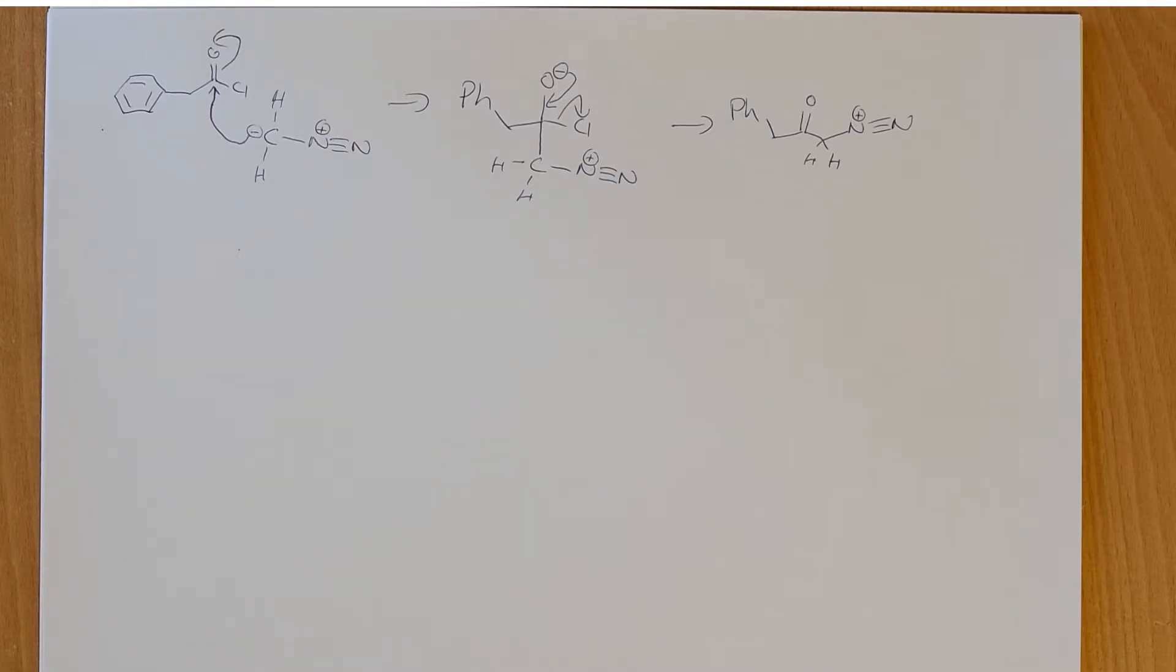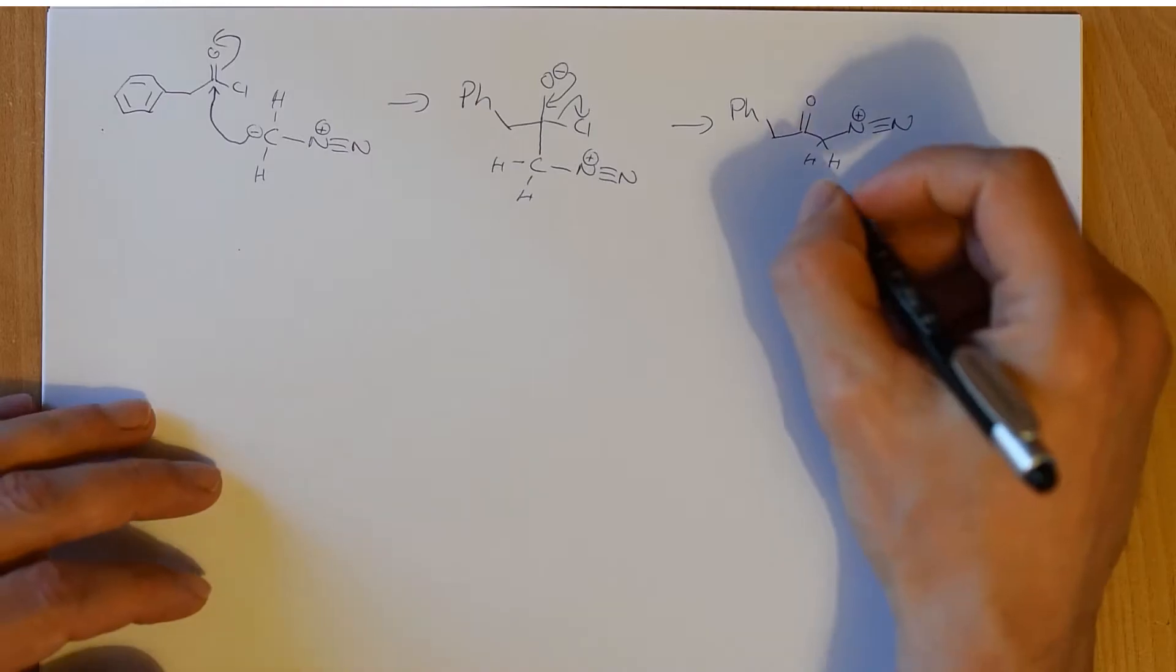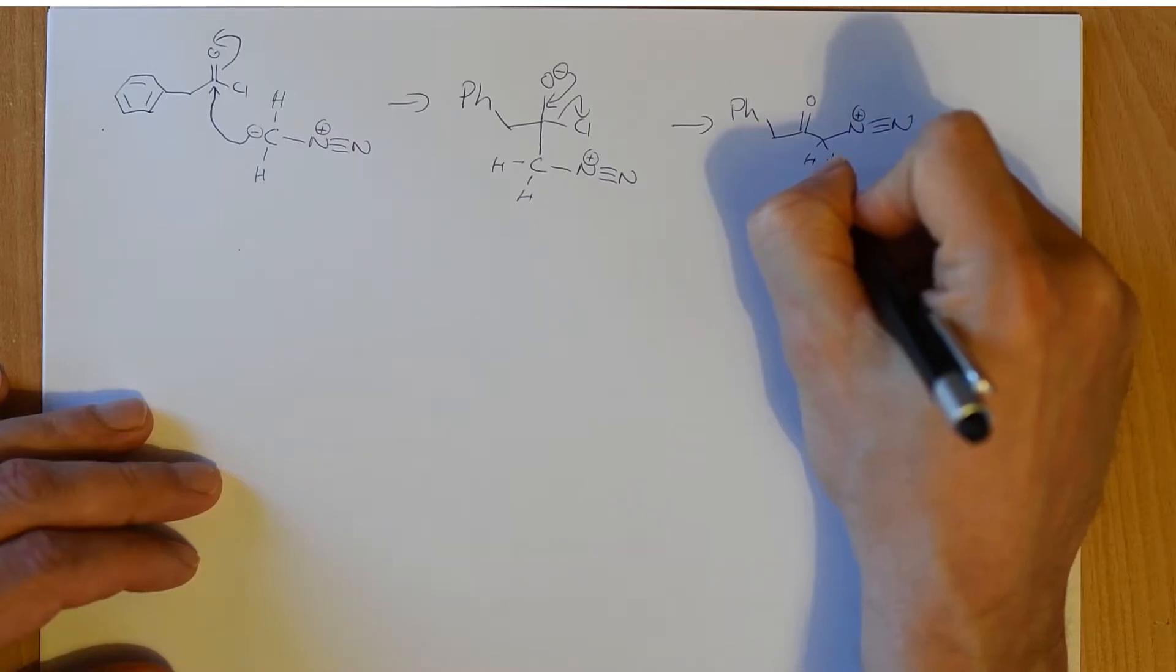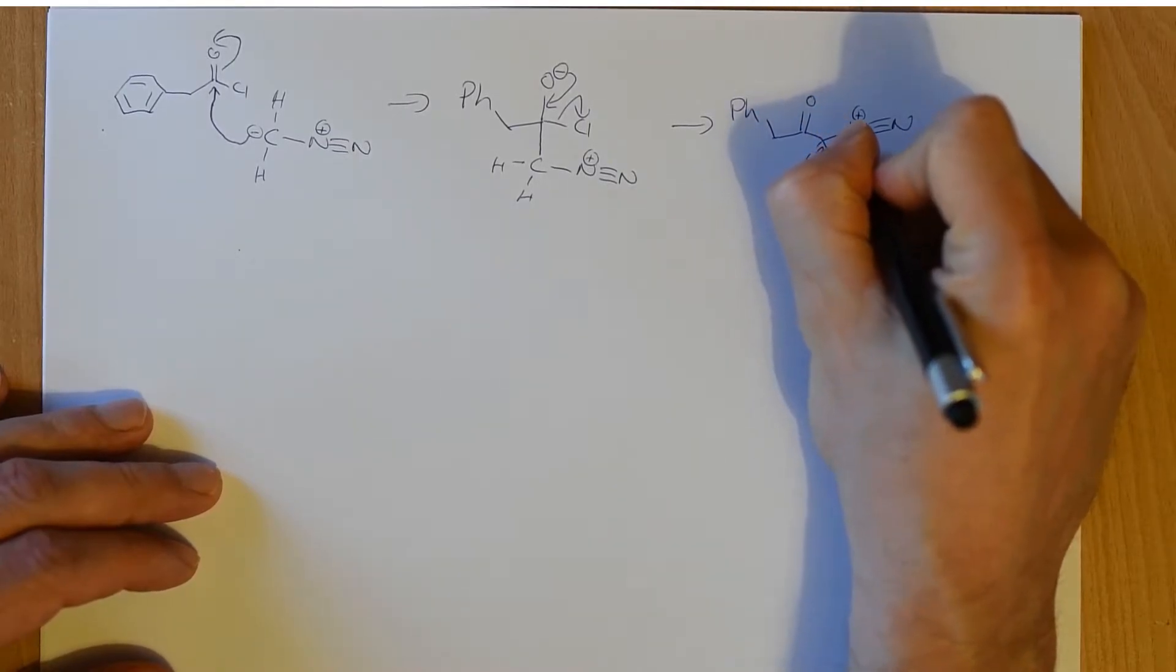That's definitely irreversible. The nitrogen gas isn't coming back. Really good leaving group. So under these conditions, it'll do the Nierenstein reaction. Under these conditions, if we leave the chloride in there, the chloride will come along and attack and kick out nitrogen gas.